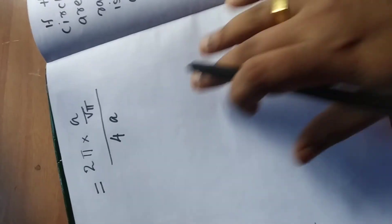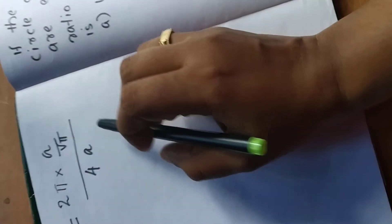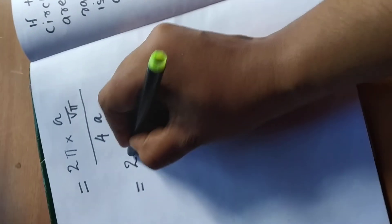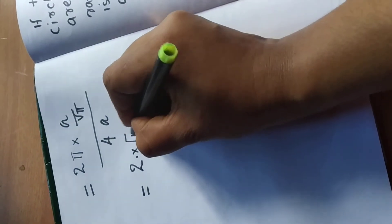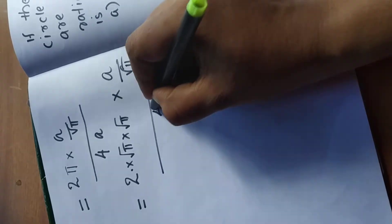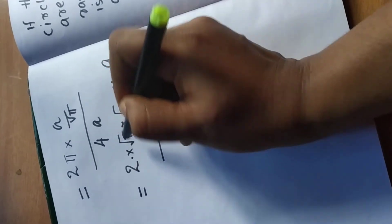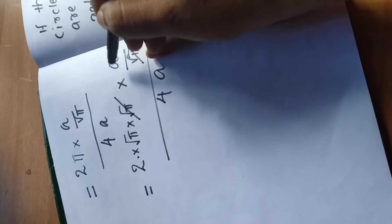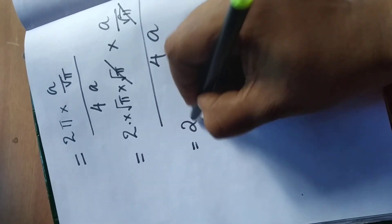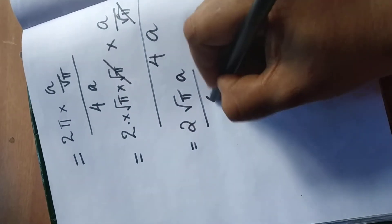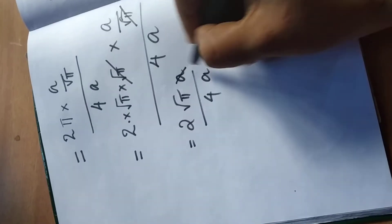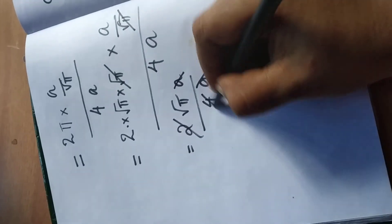We substitute r = a/√π. We can write 2 × √π × √π × (a/√π), then one √π cancels, giving us 2√π · a in the numerator divided by 4a. The a terms cancel, leaving 2√π over 4, which simplifies to √π over 2.